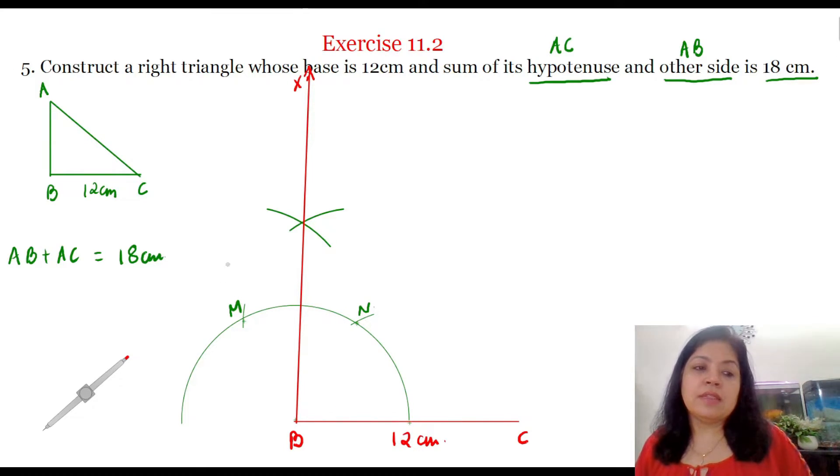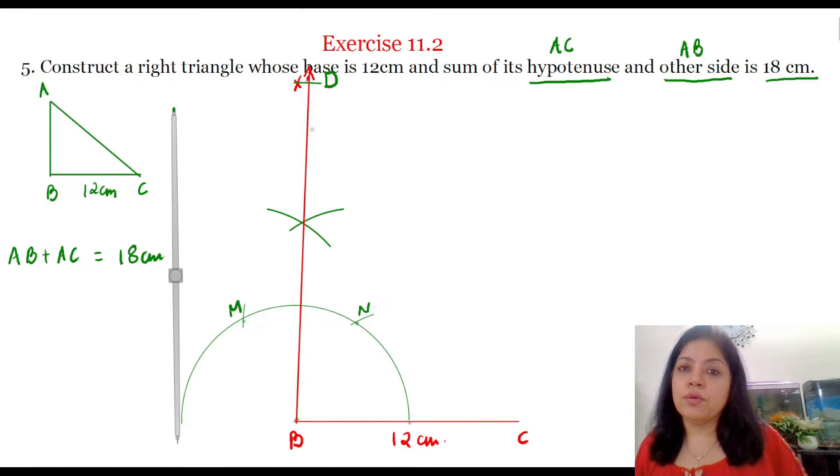Now we are given that AB plus AC is equal to 18 cm. So we will place the compass at B and open the compass equal to 18 cm and cut this ray BX. Let this point be point D. Now it will be difficult for you all to open the compass equal to 18 cm. So you can mark this point D with the help of scale and then draw an arc with the compass. Join DC.